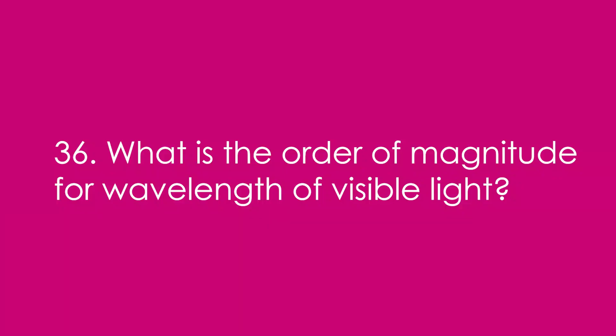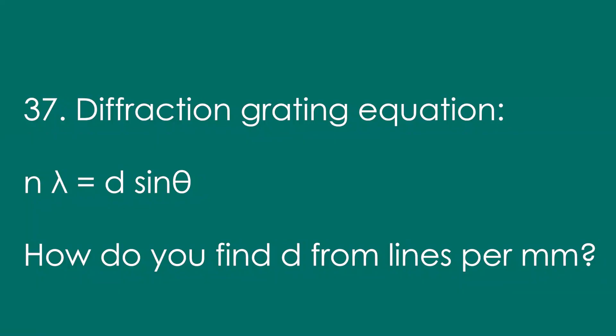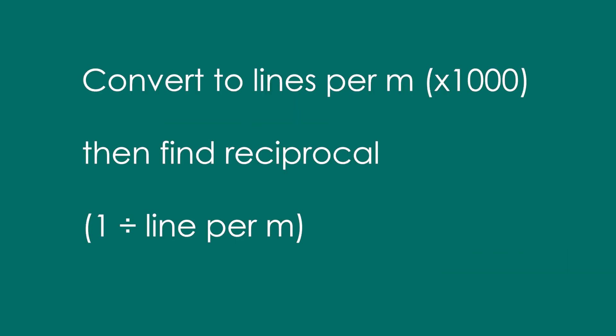36. What is the order of magnitude for wavelength of visible light? It's 10 to the minus 7 meters, or hundreds of nanometers. 37. The diffraction grating equation is n lambda equals d sine theta, but how do you find d from lines per millimeter? You convert to lines per meter first by multiplying by a thousand, then find the reciprocal — that's one divided by it.